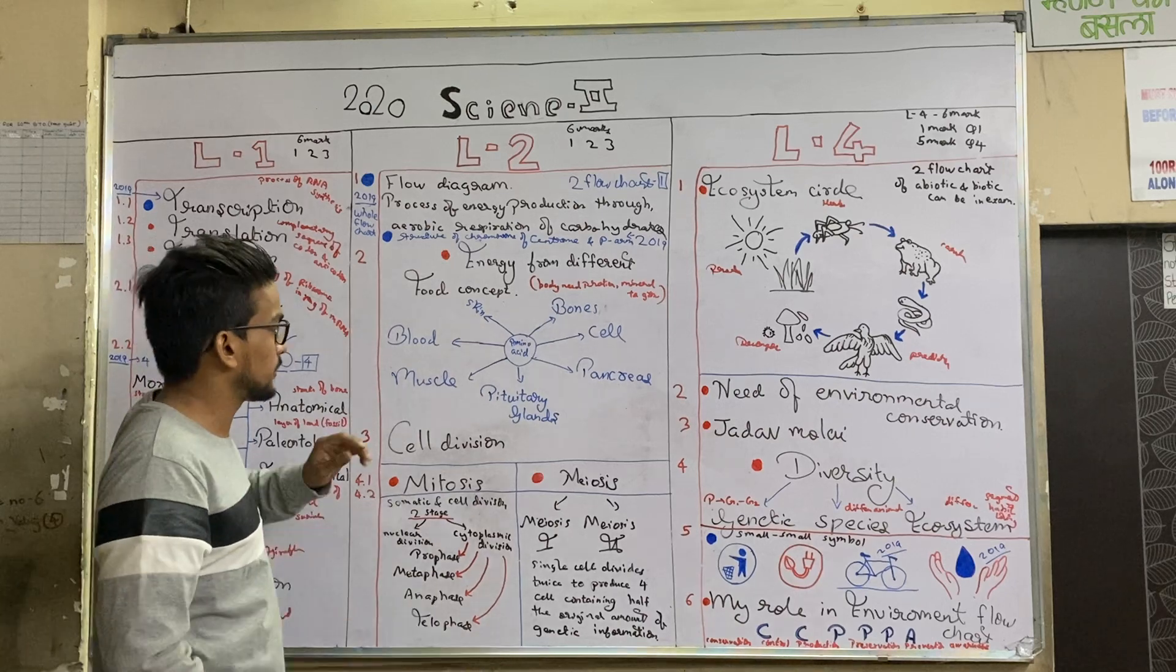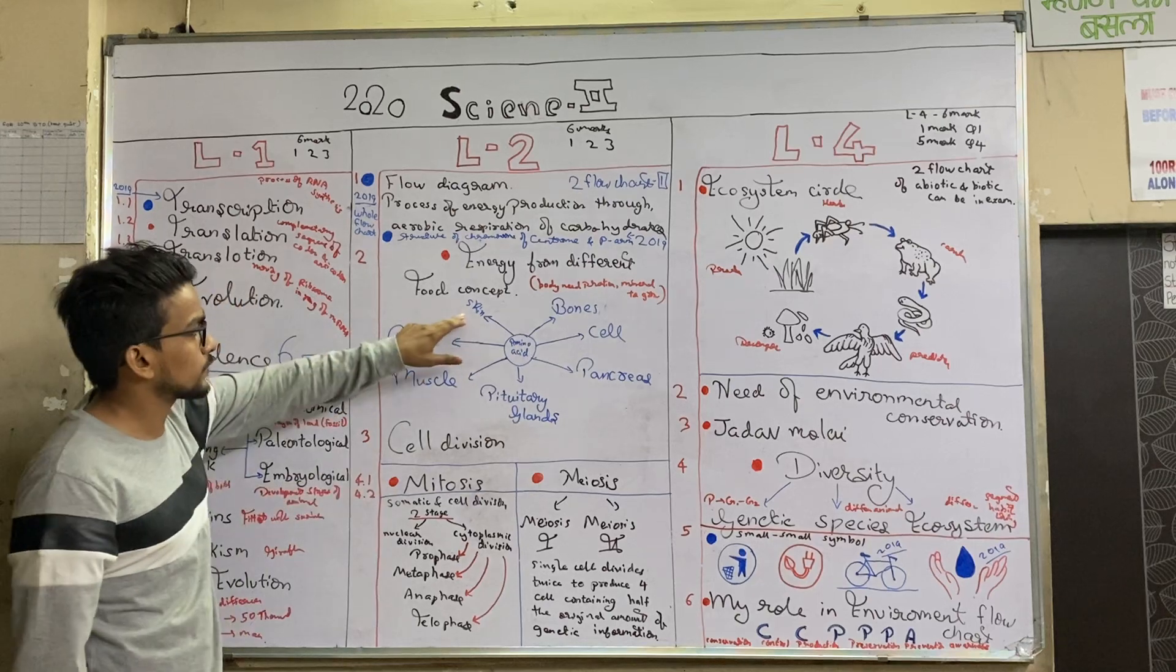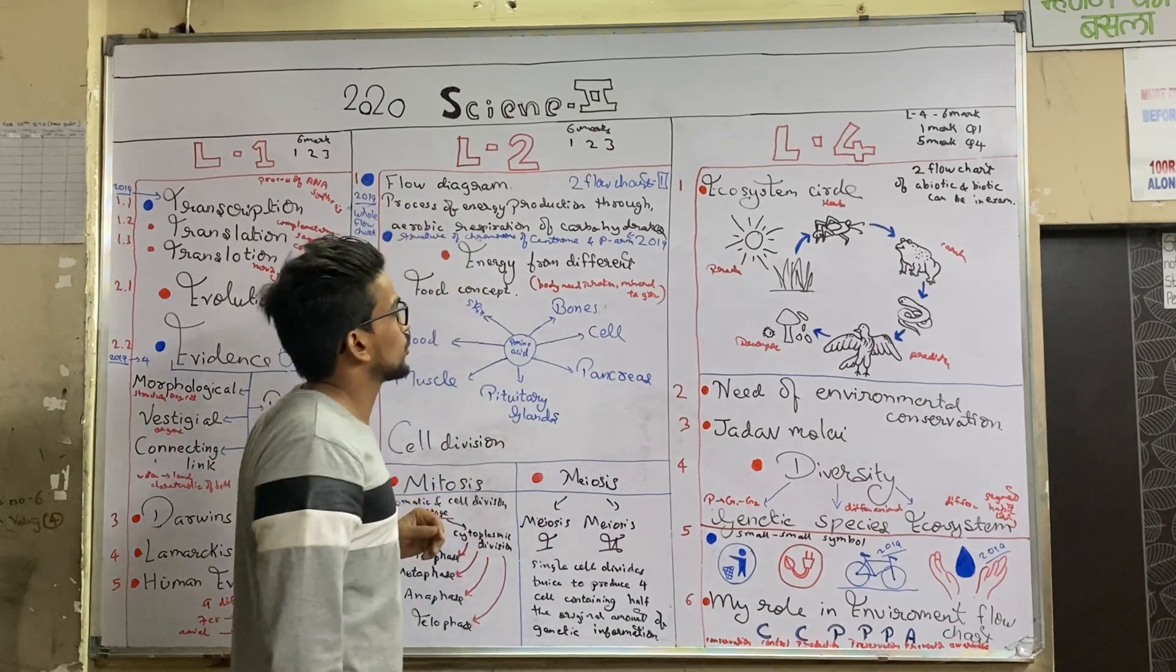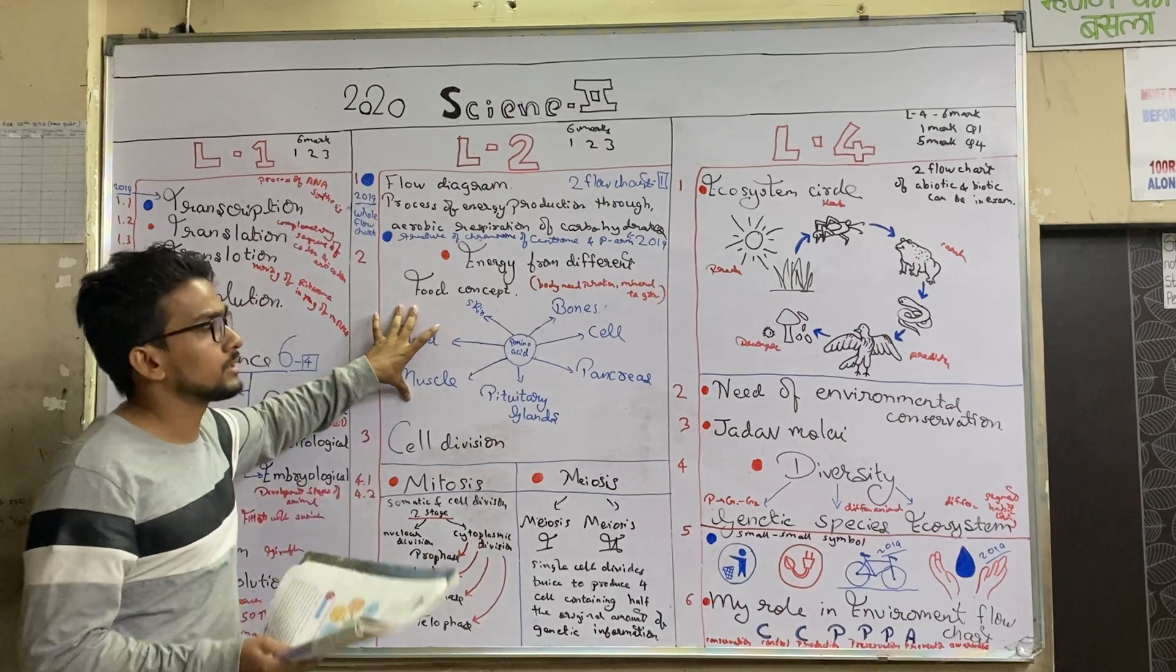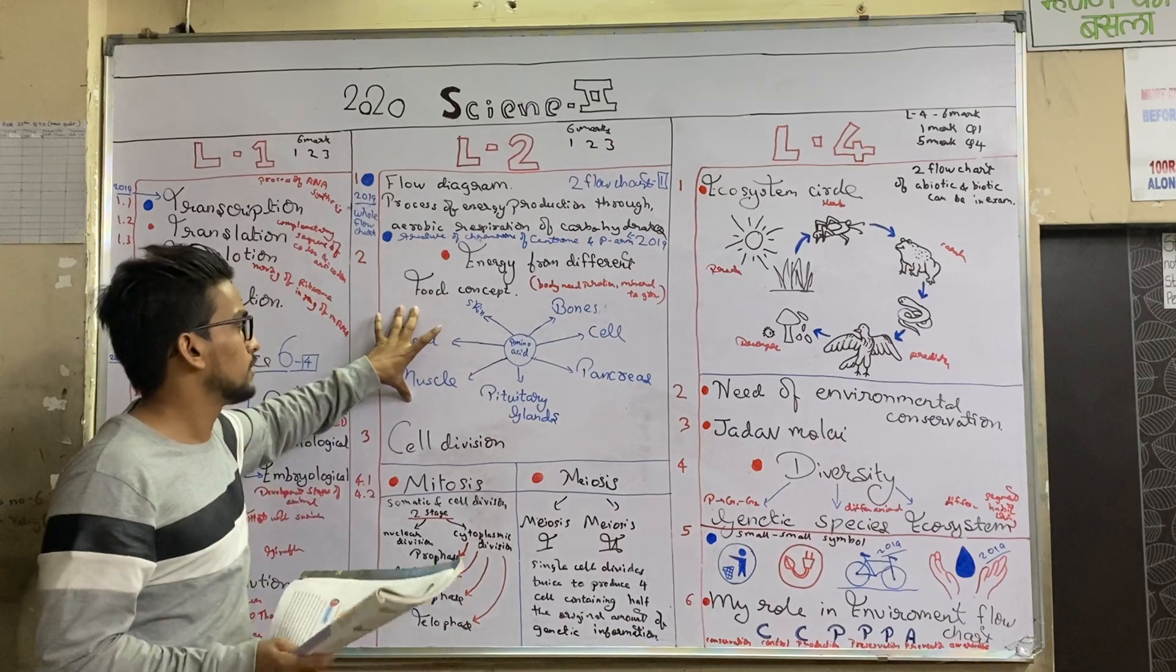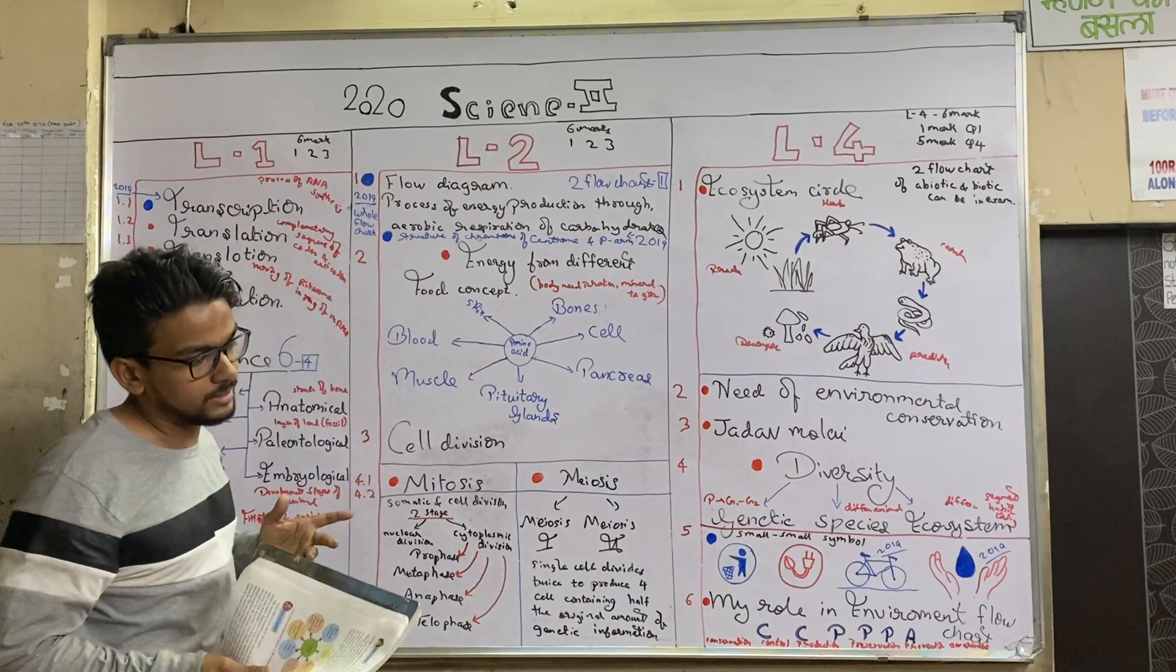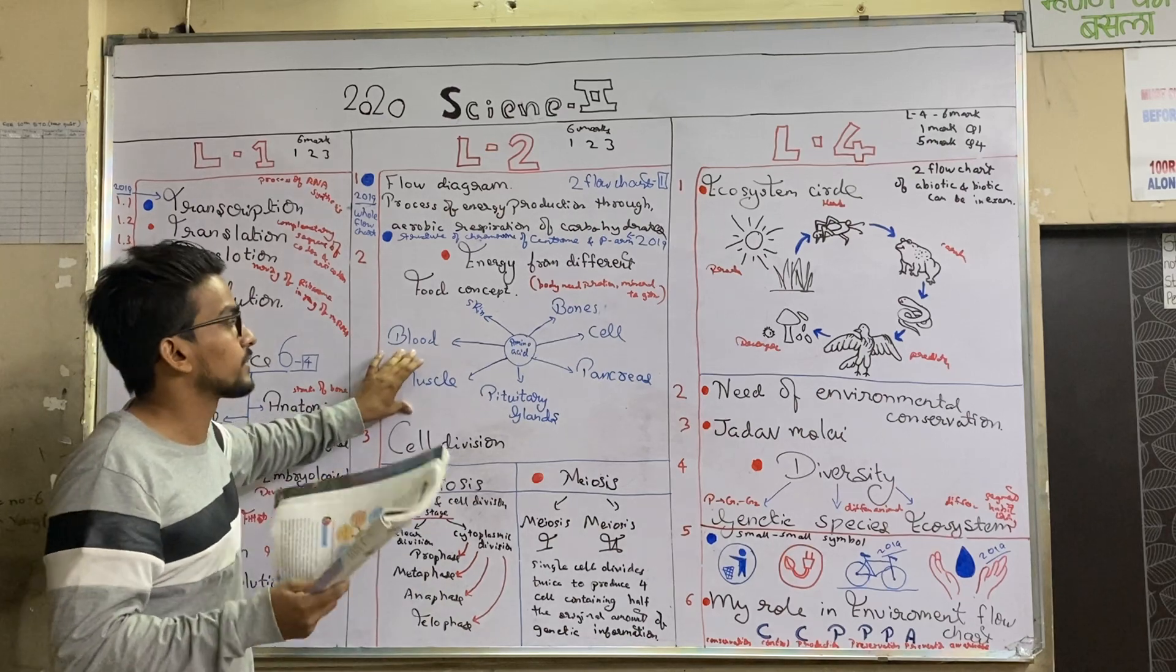So what we have is the amino acid in between. And we have one, two, three, four, five, six, seven different types. You have blood muscles, parotid glands, then your pancreas, then your cell and bone. So the moral of this is, your body needs protein or minerals, and that is supplied to different parts of the body. It works with different things and provides different types of working.